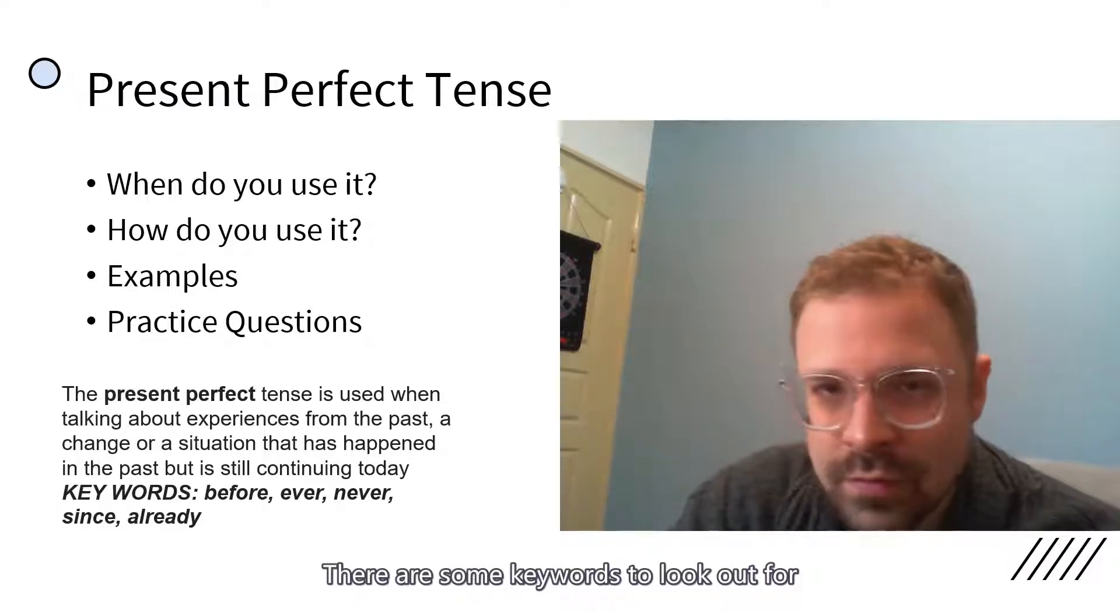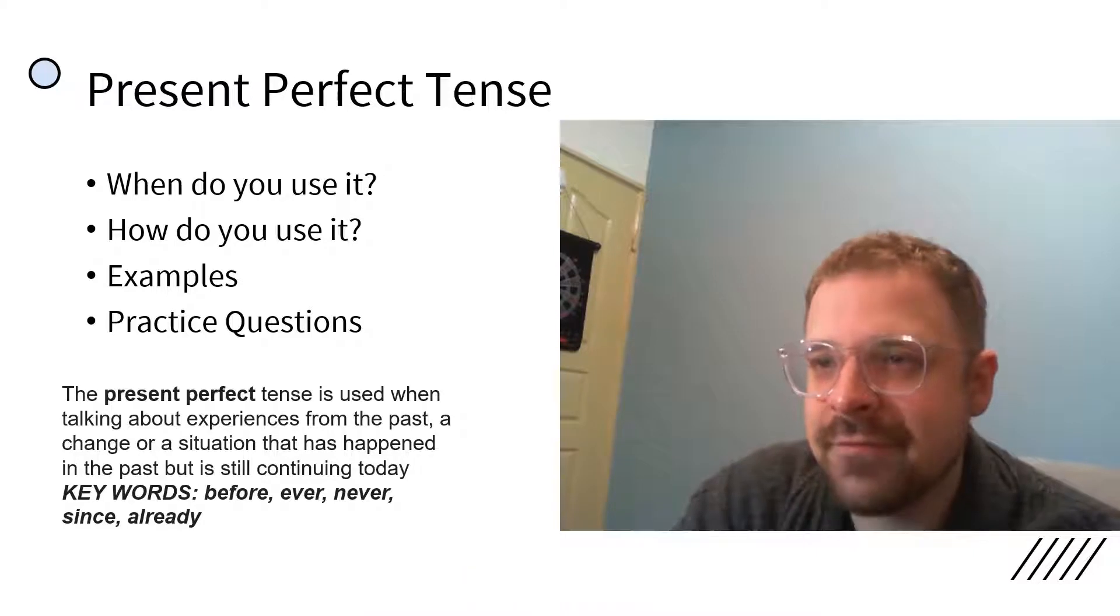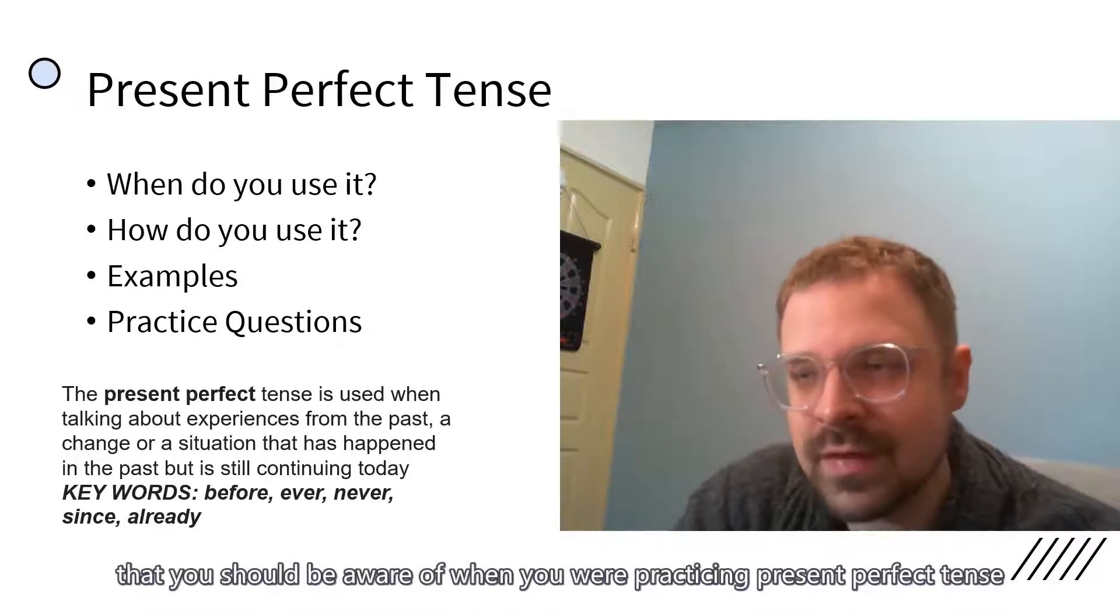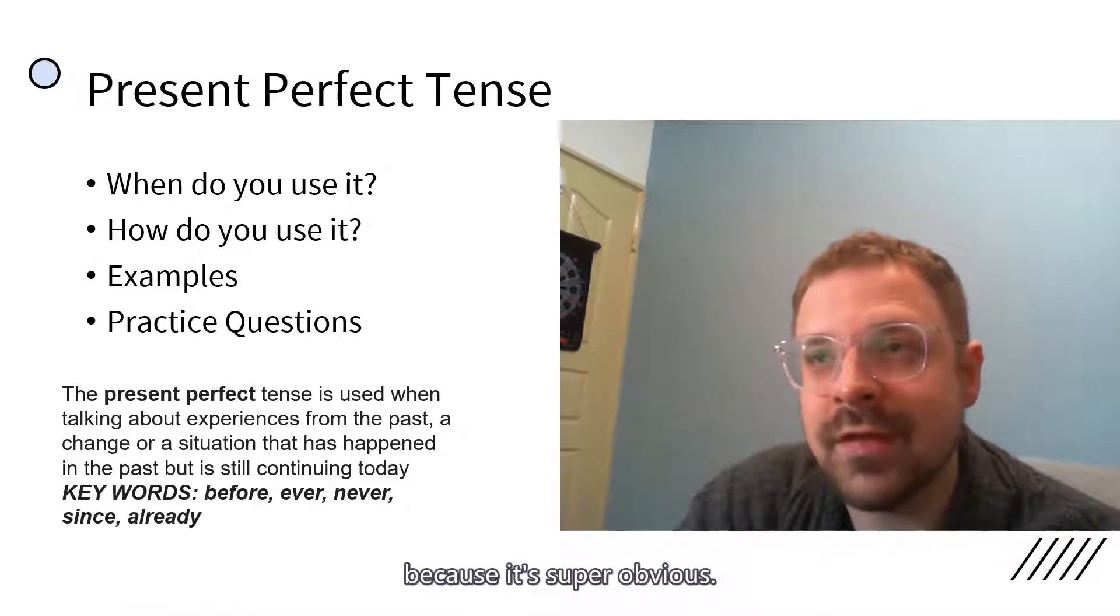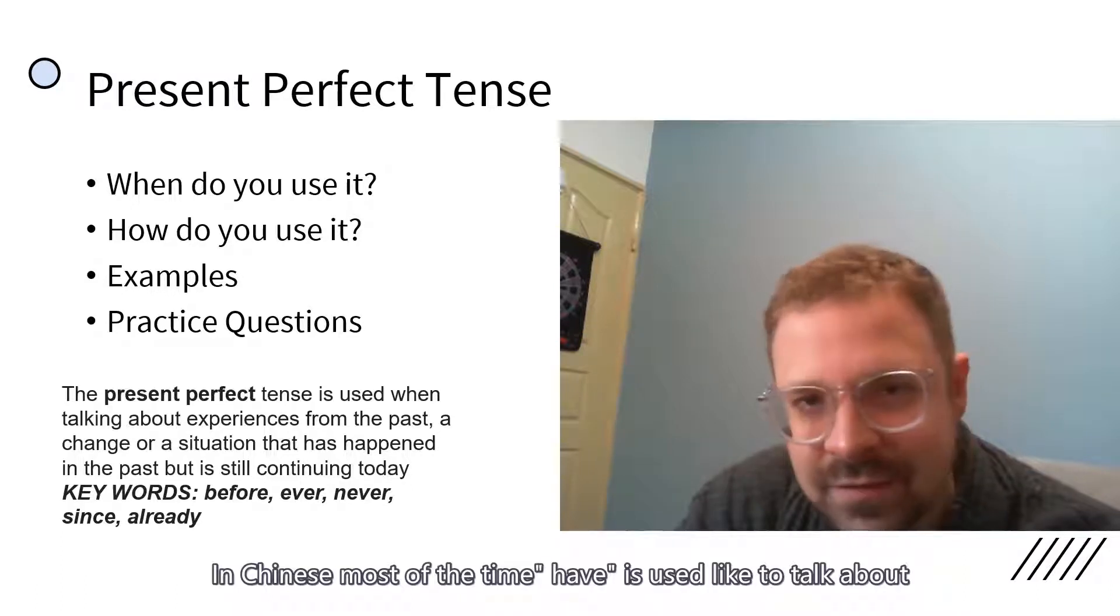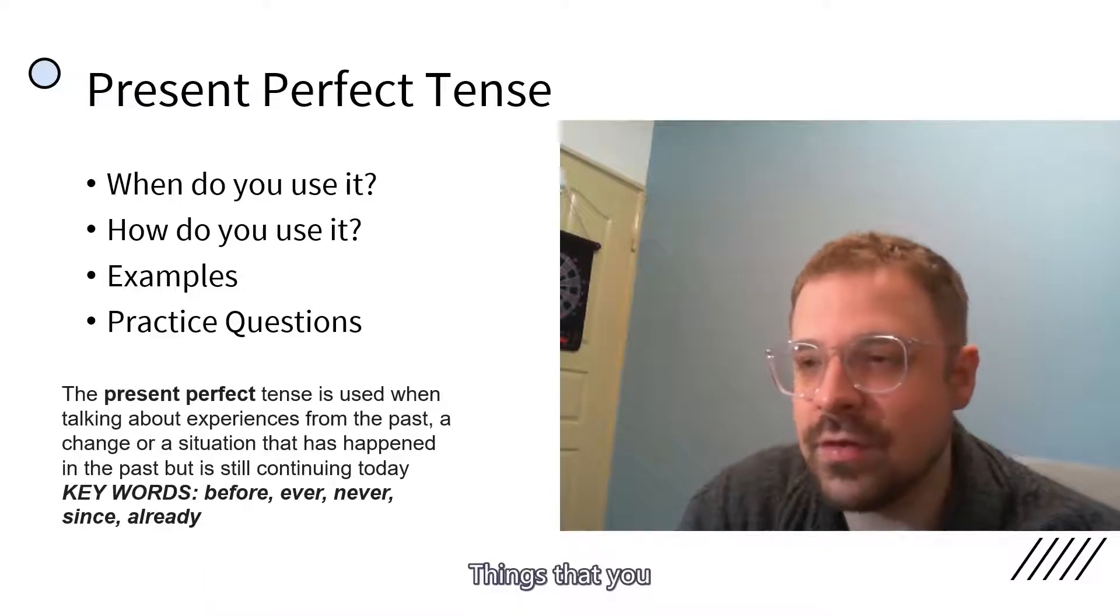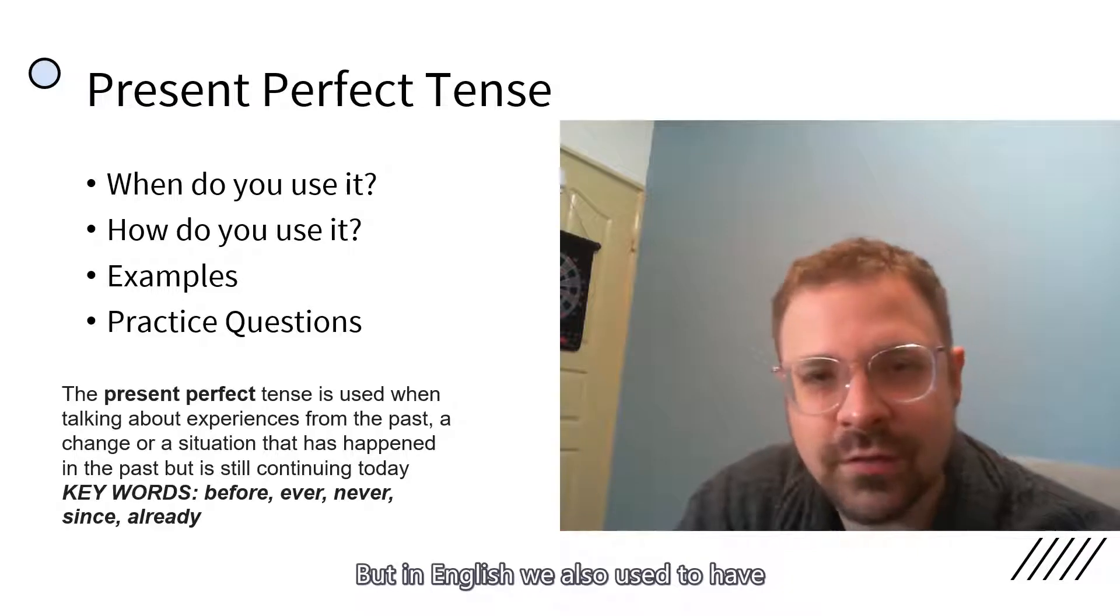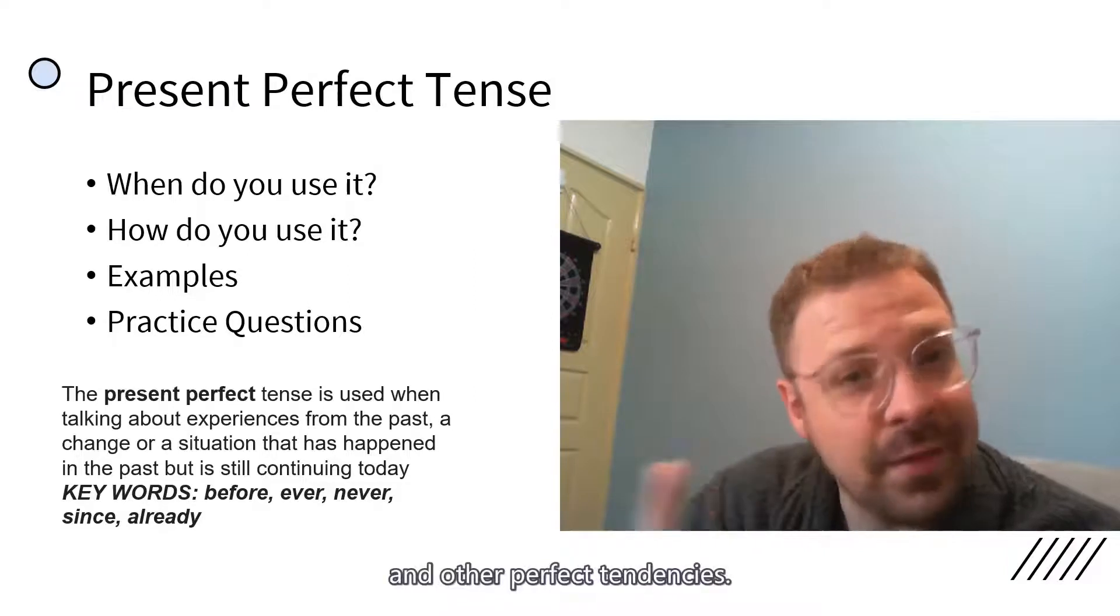There are some keywords to look out for. So right there they are. We have before, ever, never, since, and already. These are the keywords that you should be aware of when you're practicing present perfect tense. One keyword that I didn't write there because it's super obvious is the word have. In Chinese, most of the time have is used to talk about things that you possess, things that belong to you. But in English, we also use have as a word that denotes present perfect tense and other perfect sentences.